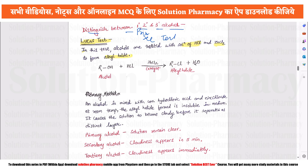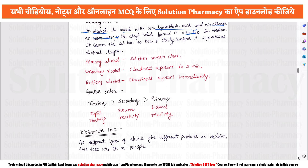In the Lucas test, we use concentrated HCl. The alcohol is mixed with concentrated HCl and zinc chloride (ZnCl₂), which acts as a catalyst, at room temperature. The alkyl halide formed is insoluble, and the solution becomes cloudy with a separate layer. If primary alcohol is used, the solution will not become cloudy — it remains clear.